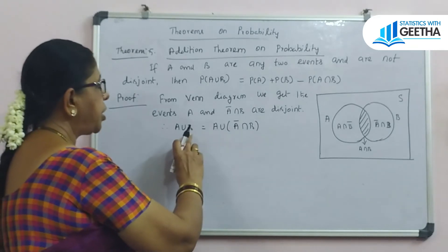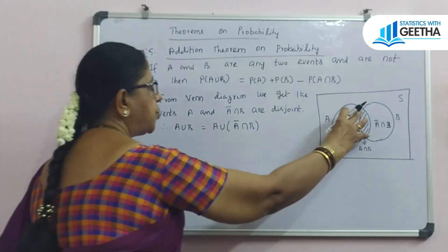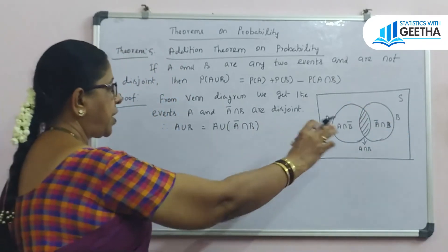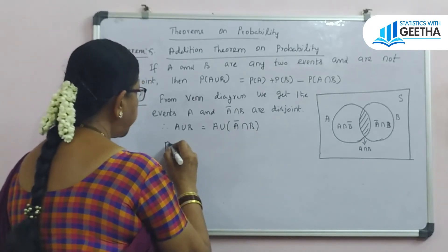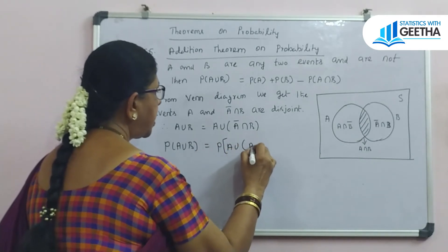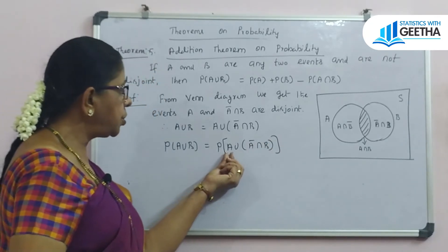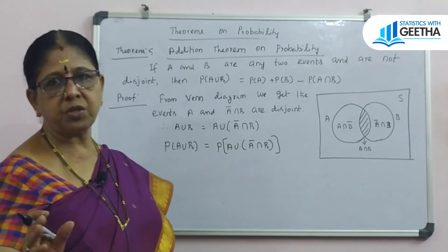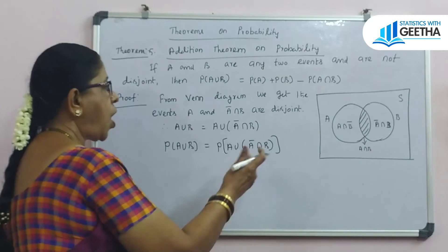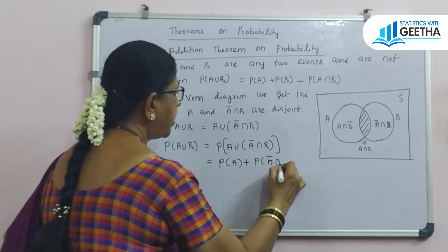From the Venn diagram, A ∪ B can be written as A union (A' ∩ B). Taking probability on both sides, P(A ∪ B) equals P(A union A' ∩ B). Since A and A' ∩ B are mutually exclusive events, applying axiom 3 gives P(A) plus P(A' ∩ B).